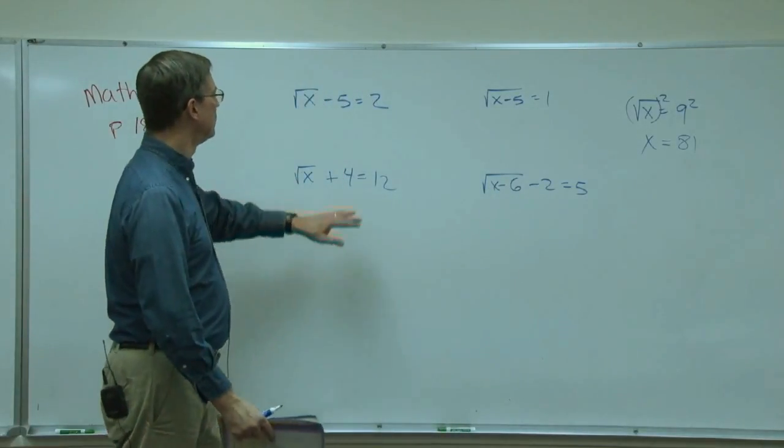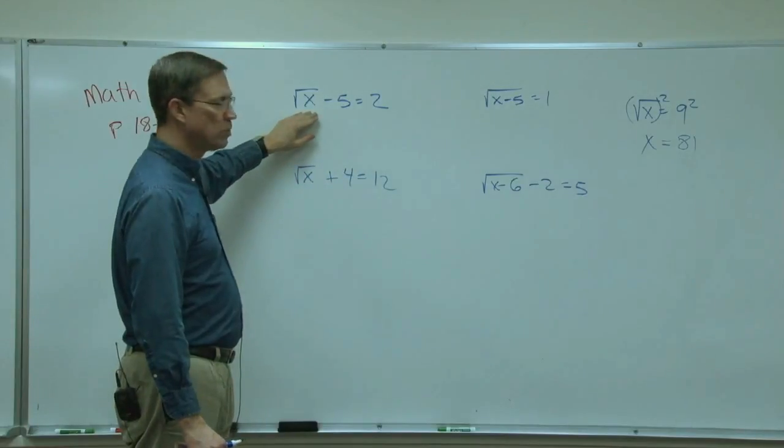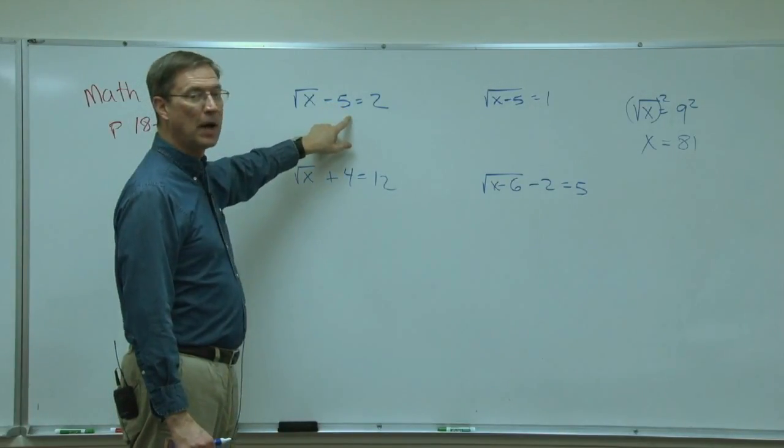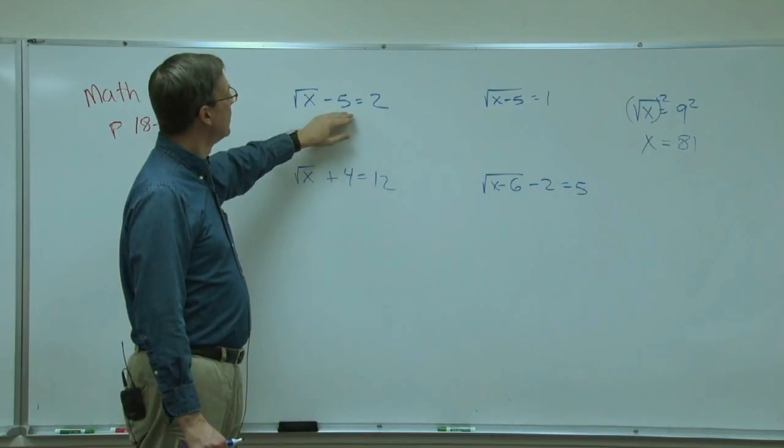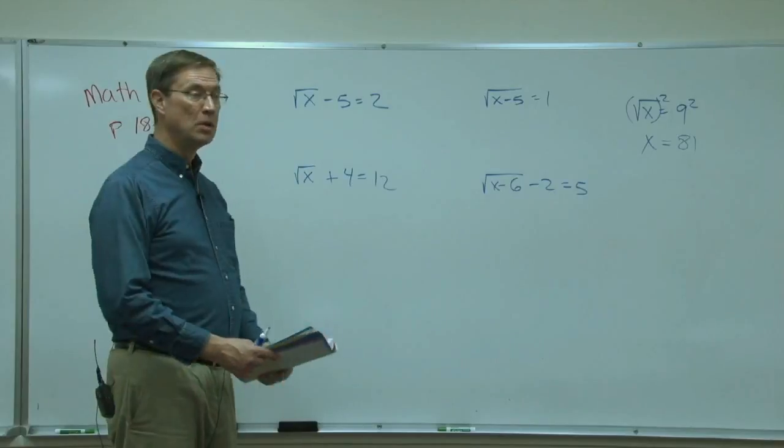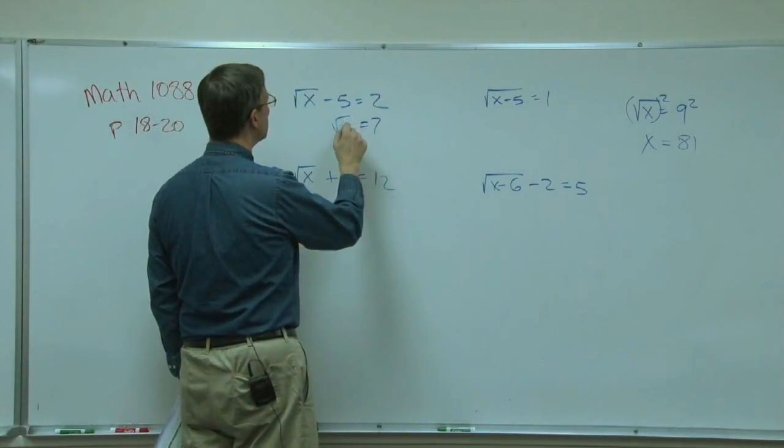So now we can take that idea, transfer it over here, and I have a little equation but notice I have the square root in here. First I want to get rid of the minus 5, so we undo the subtraction with addition. We'll add 5 to both sides. I'm going to go ahead and do that and get 7, so the square root of x equals 7.